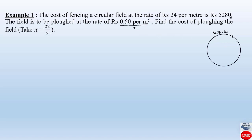Per meter square, rupees 0.50 is the amount given to plow the field. We have to find out the total cost required to plow this whole field. To find out the total cost of plowing, first of all we have to know the area of this field, because per meter square they are paying rupees 0.50.